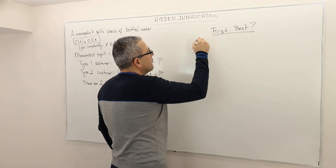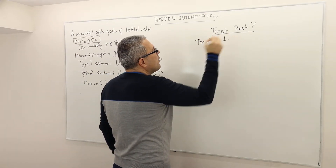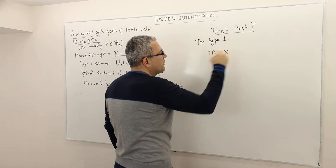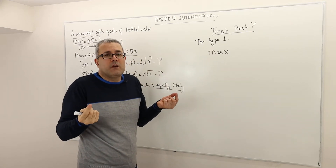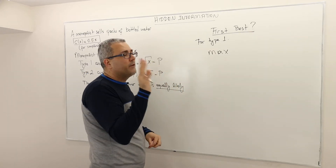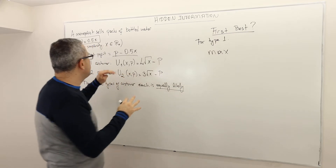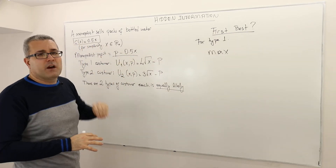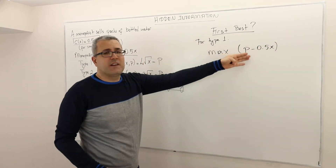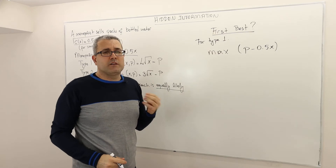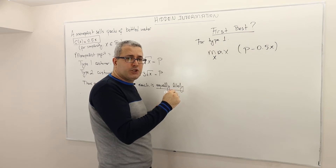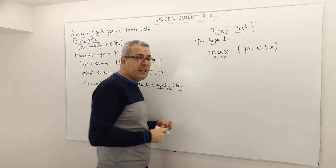So in this environment where all information is perfectly observable, what should be the package for type 1 and for type 2? For type 1, the monopolist solves the following optimization problem: maximize profit, which is P minus 0.5X, subject to a constraint. The choice variables are both X and P — because there's no competition and no market-fixed price, the monopolist is not a price taker. The monopolist determines both the price and the pack size, so they maximize profit by choosing both X and P.